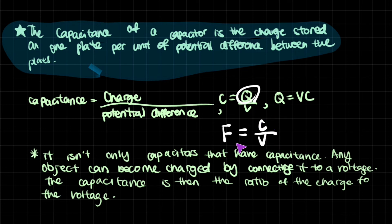This is just the simplification of these letters or these words. Side note is that this isn't only capacitors that have capacitance. Any object can become charged by connecting it to a voltage. The capacitance is then the ratio of the charge to the voltage, C over V. Even you can have a little bit of capacitance. If you got charged, there might be a difference in terms of the charge on one part of your body and another part of your body. So that would make you also have capacitance.